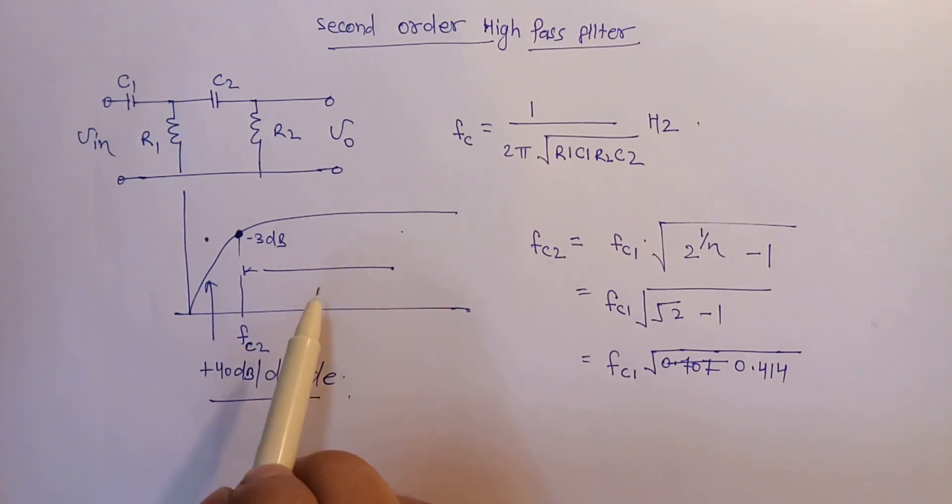application of this type of passive filter is in audio amplifiers as coupling capacitors between two audio amplifier stages to remove the DC components, and in speaker systems to direct the higher frequency signals to the smaller tweeter type speakers while blocking the lower bass signals. Also used as a filter to reduce any low frequency noises or rumble type distortions.